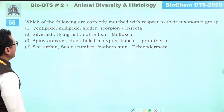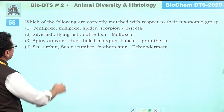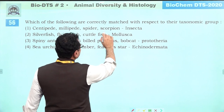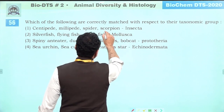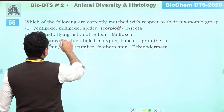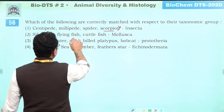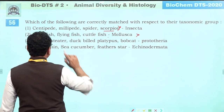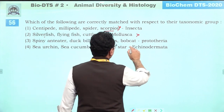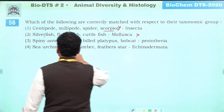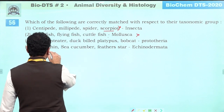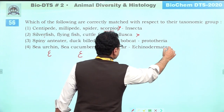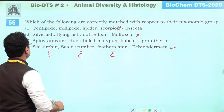Correctly matched taxonomic groups: Centipede, millipede, spider, scorpion — all arthropods. But scorpion is an arachnid, not an insect. Silverfish (insect), flying fish (a fish — Exocoetus), cuttlefish (mollusca) — cannot match. Spiny anteater, duckbill platypus, bobcat — not all prototherians (bobcat is not). Sea urchin, sea cucumber, feather star — all echinoderms — correct. Answer is four.